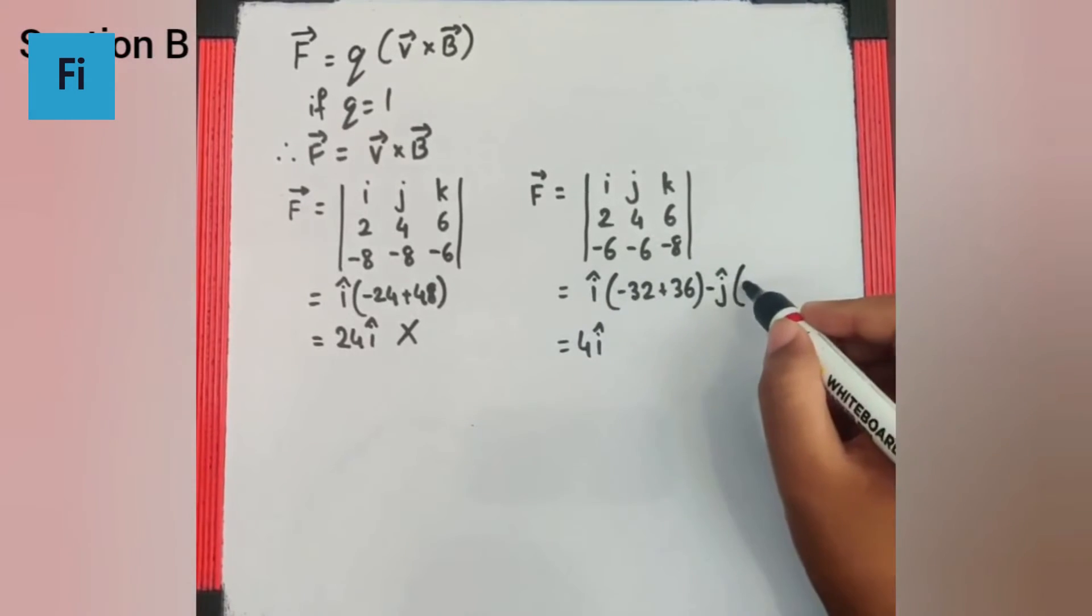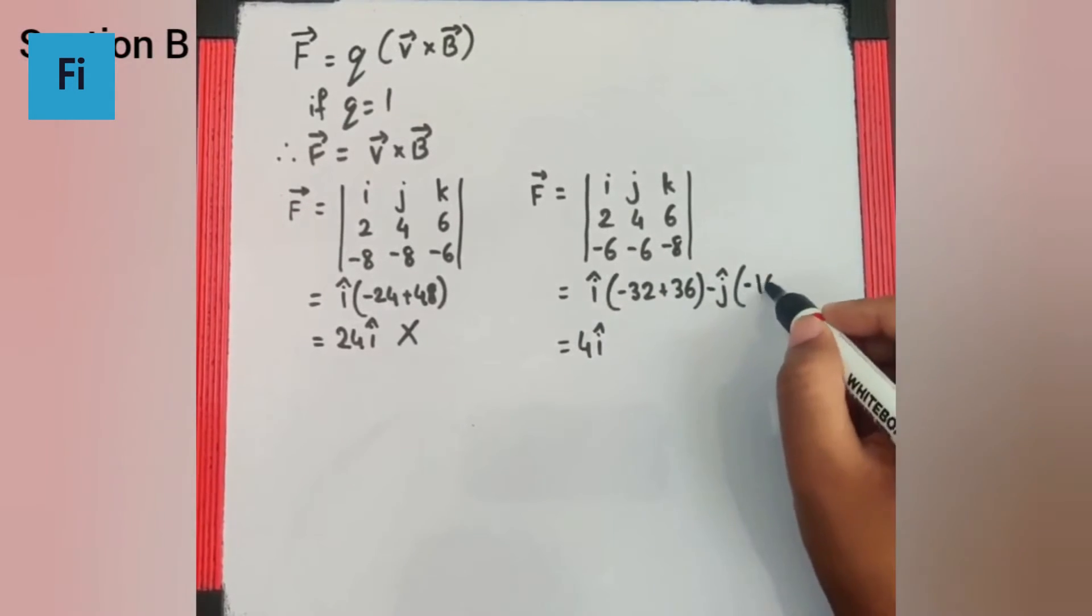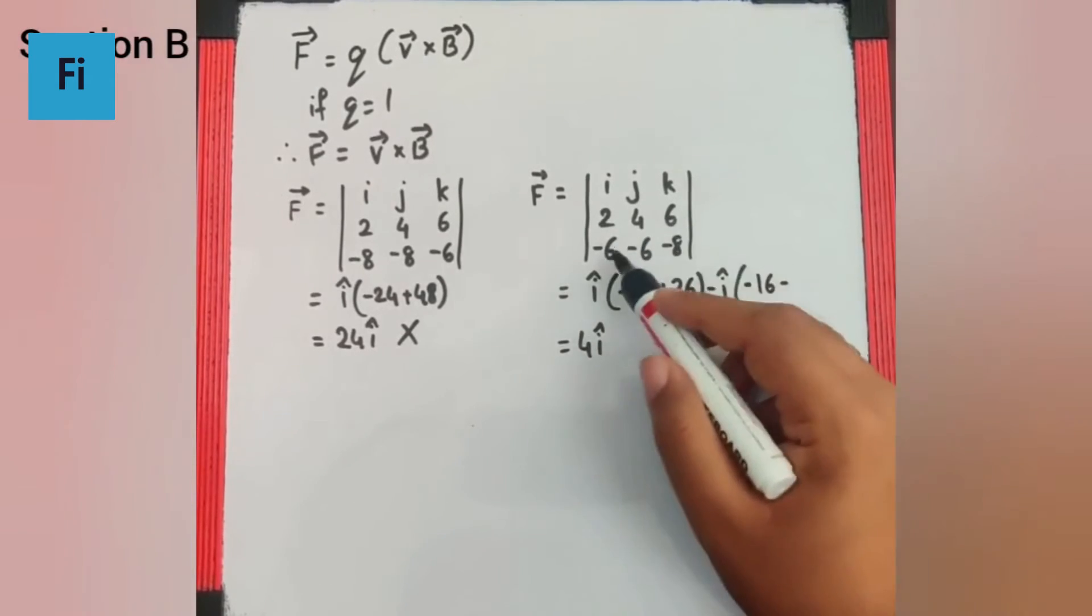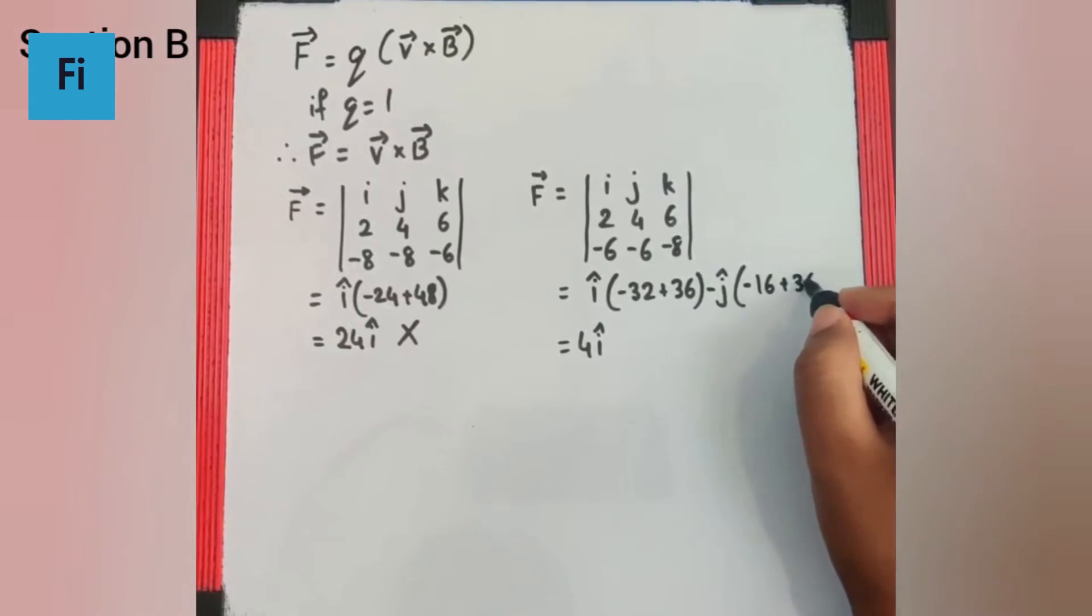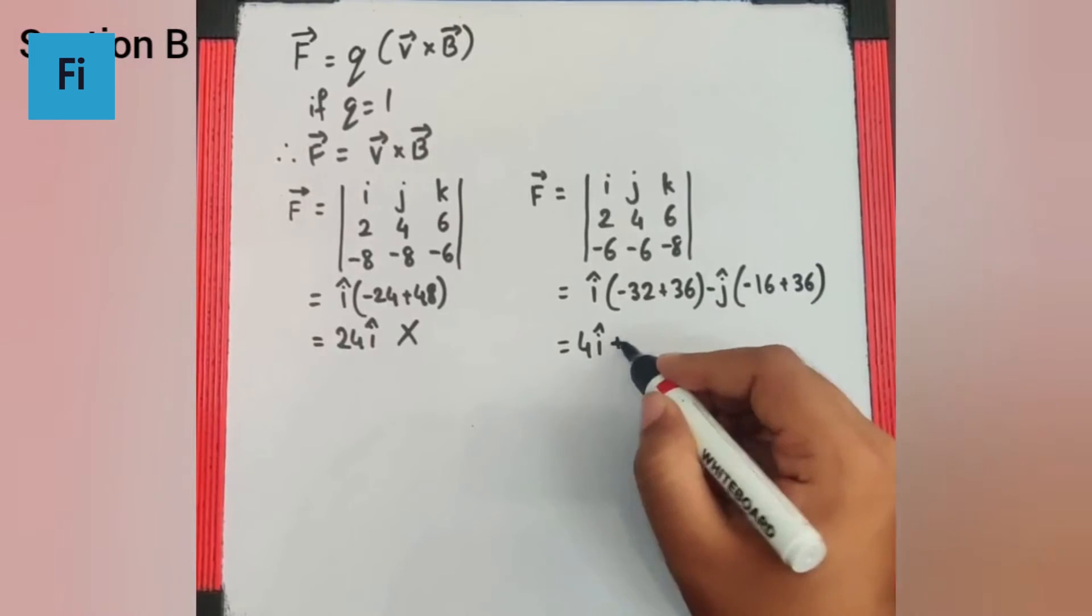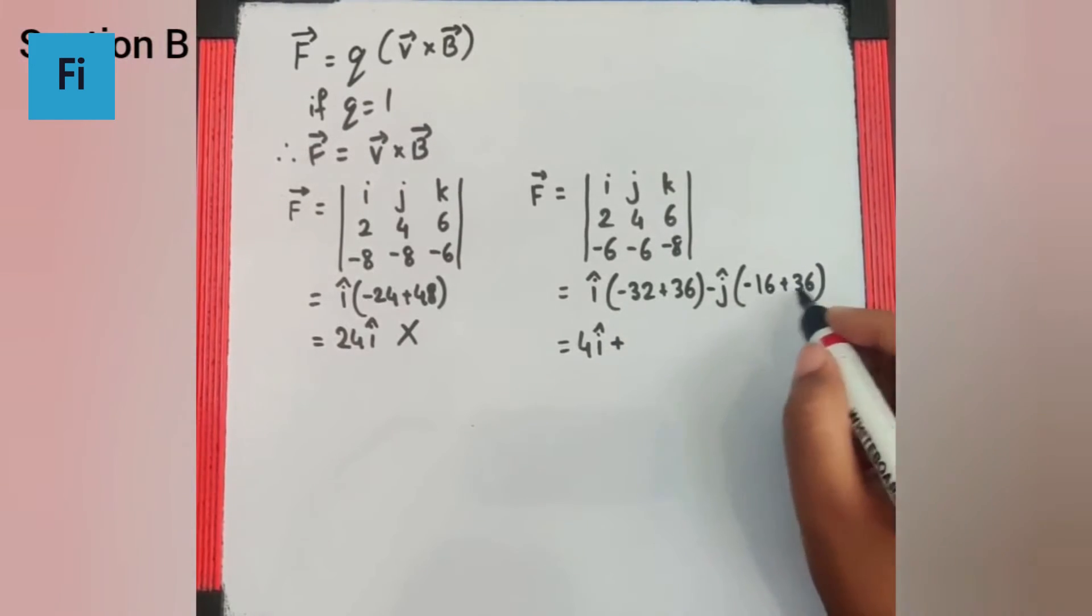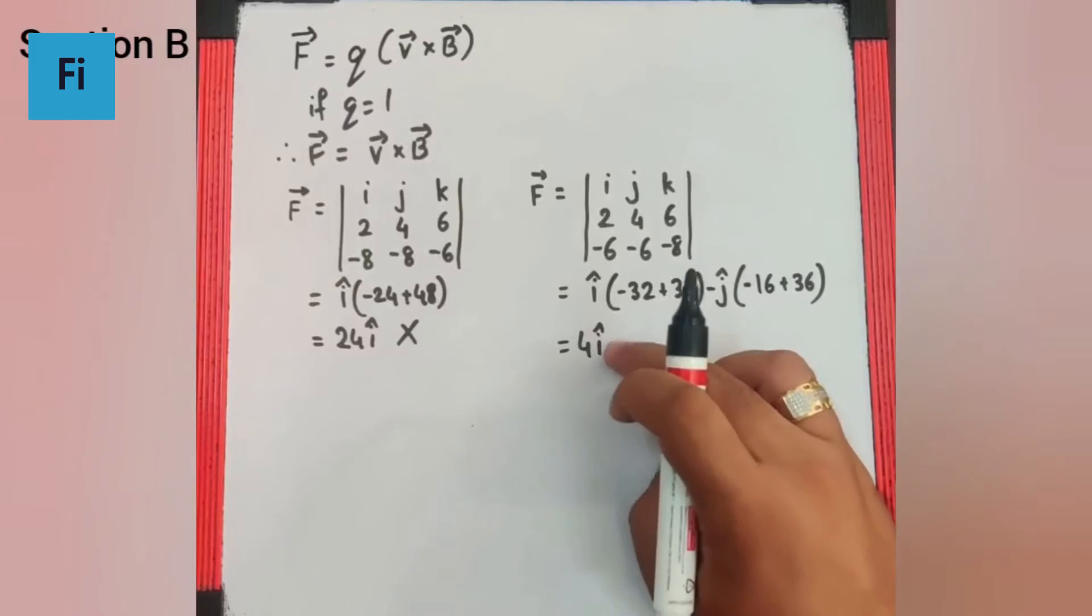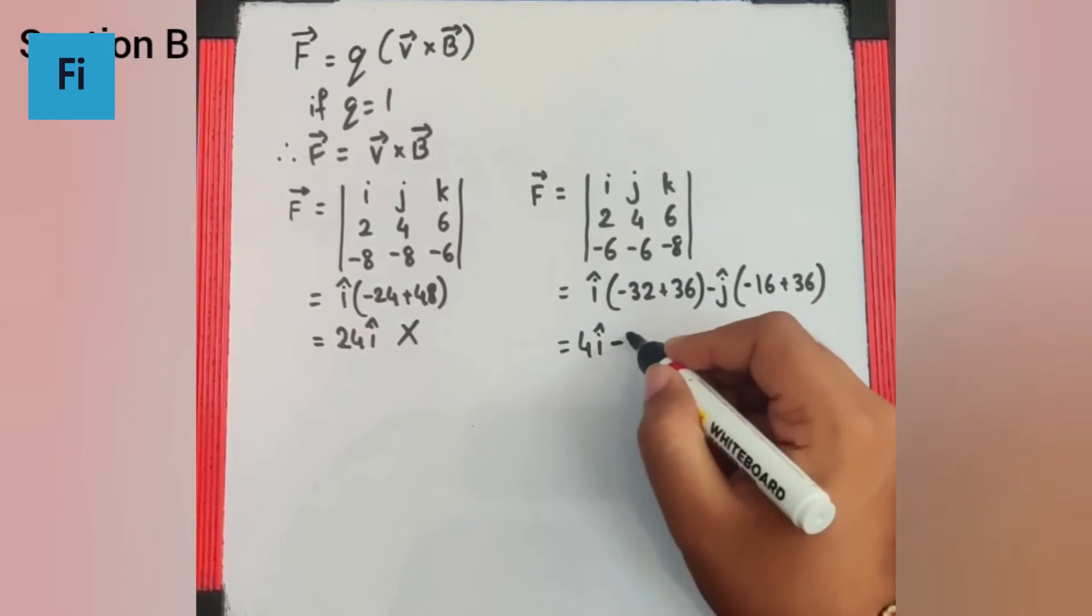Now let's talk about the j cap. It's 2 into 8 is 16, that's minus 16, minus 6 times 6 are 36, minus minus plus 36. That definitely gives us 36 minus 16 is 20, so minus 20j cap. That's what we get, so that part is also correct.